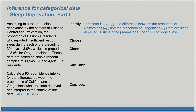Next, we'll choose the appropriate confidence interval procedure. Because we have two proportions and we're looking at their difference, we can choose a two-proportions interval for difference of proportions.